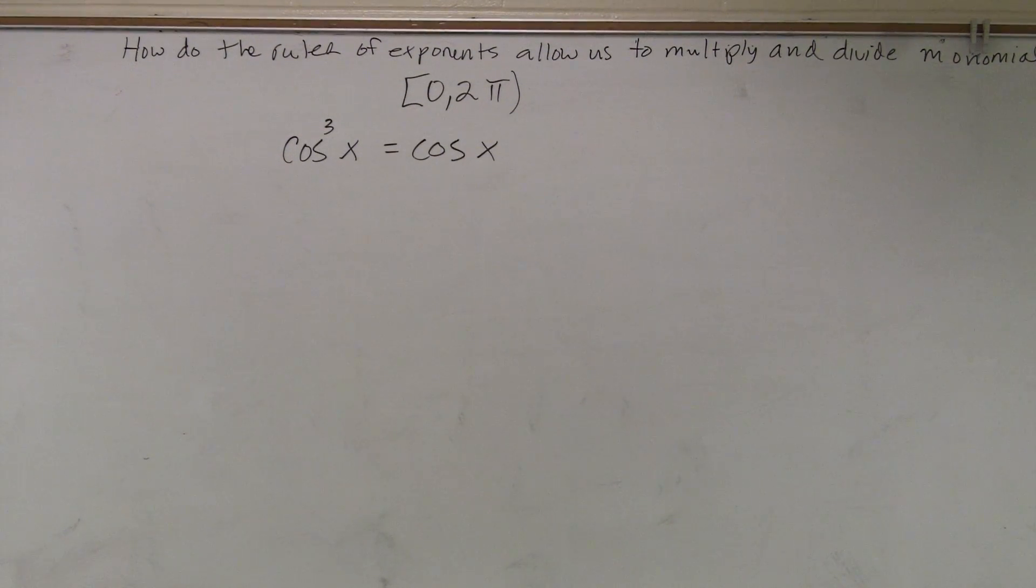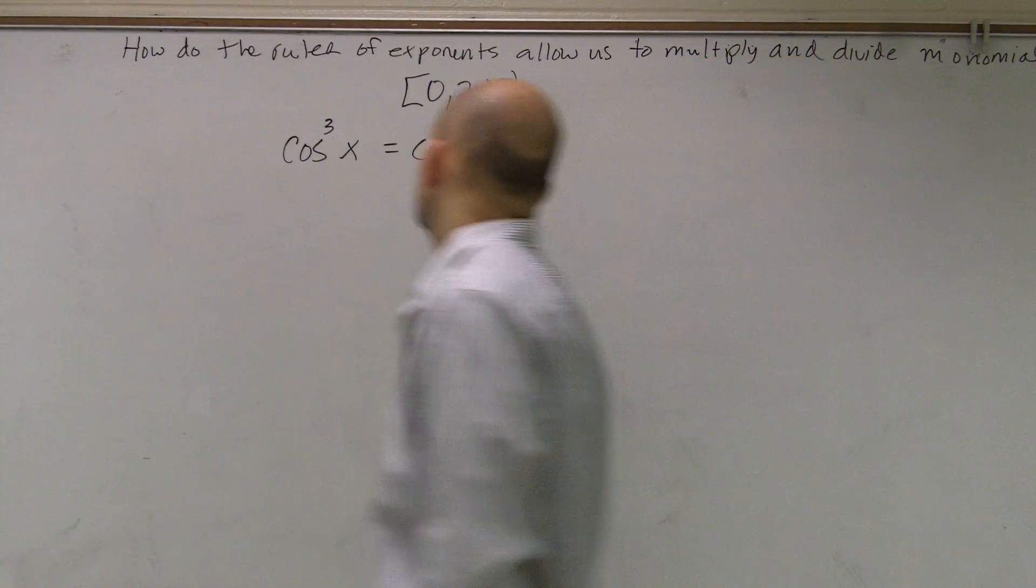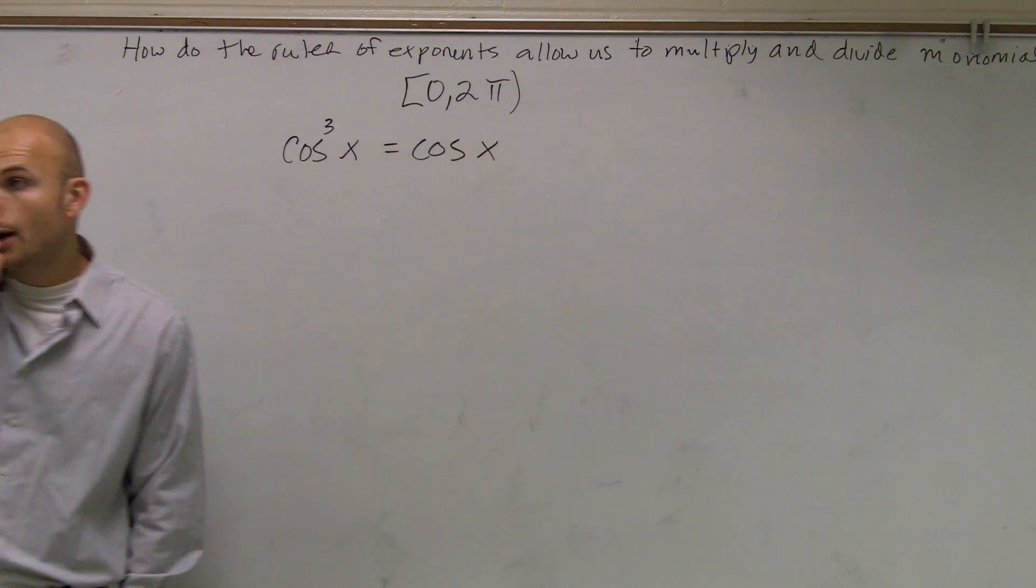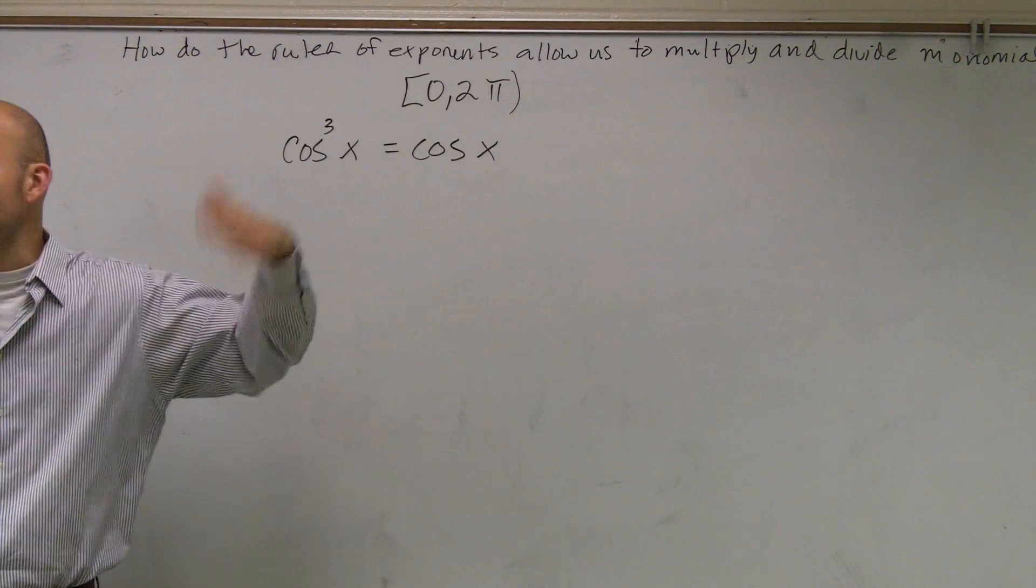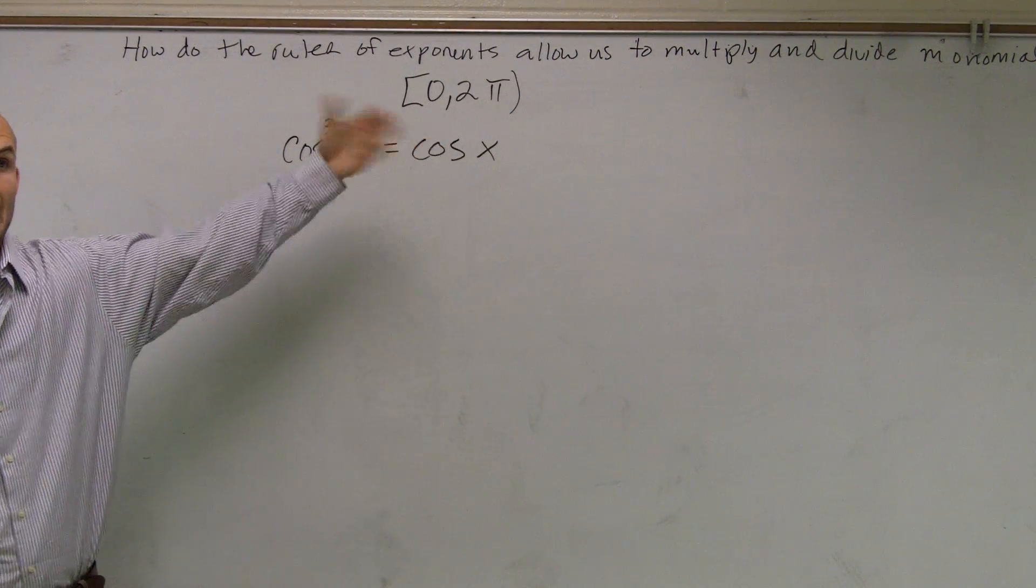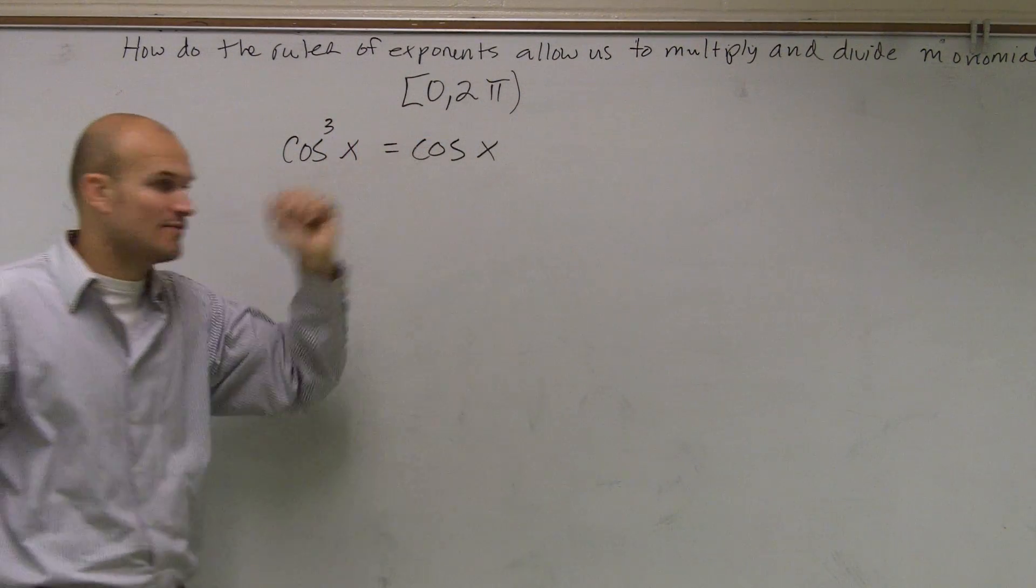So now, rather than just having unlimited solutions like adding 2π or adding π, now we have a constraint. It has to be within our constraint of our circle.